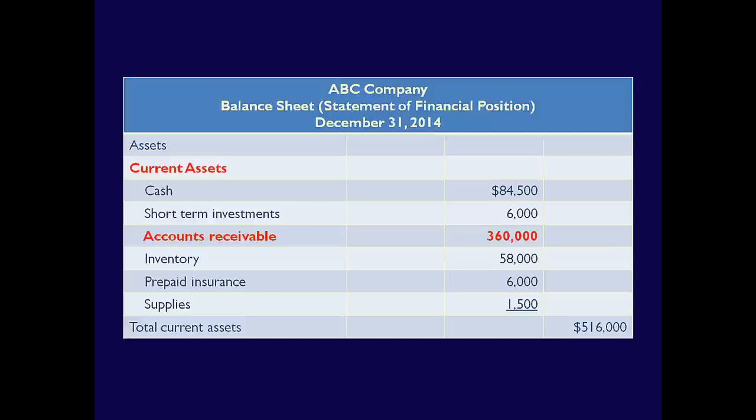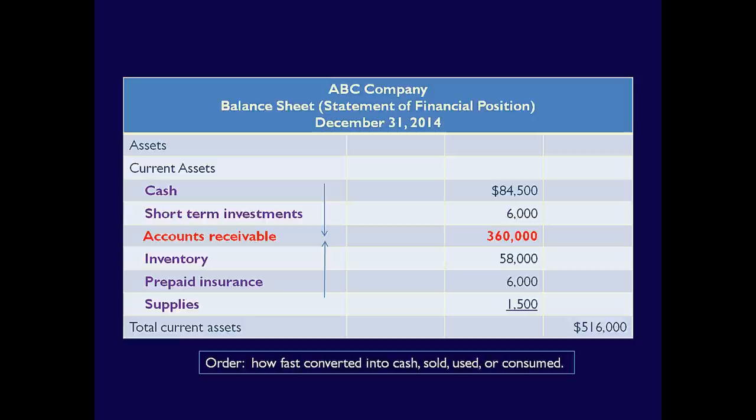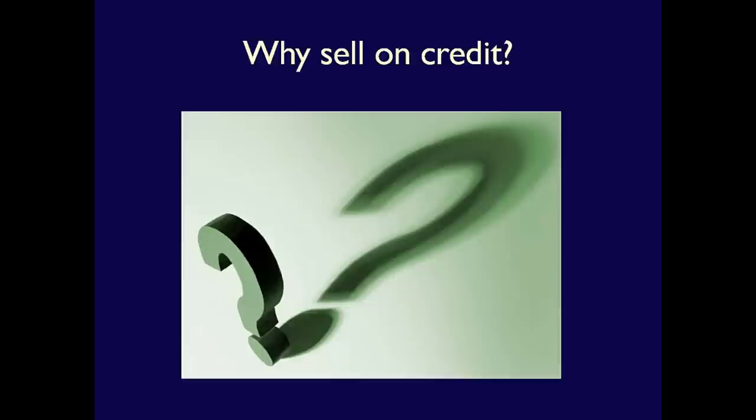Where is accounts receivable on the financial statements? Let's quickly look at the balance sheet. Accounts receivable are current assets because we generally collect the cash within one year or operating cycle, whichever is longer. Assets are listed in order of liquidity — how fast they'll be converted into cash or used to help generate revenue. Accounts receivable is listed under cash and short-term investments because it's less liquid, but above inventory, prepaids, and supplies, because it doesn't take as long to convert into cash.